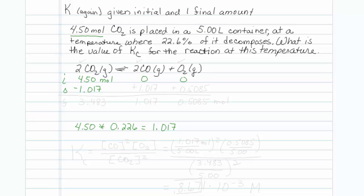Now once again we'll look at stoichiometry. The stoichiometry here is 2 to 2 to 1. So if this is minus 1.017, this has to be plus 1.017, and the oxygen has to be plus 0.5085.